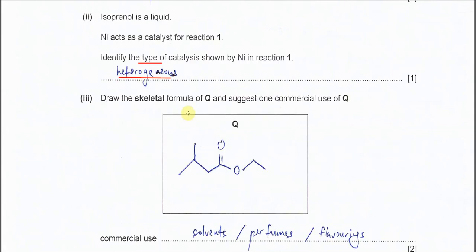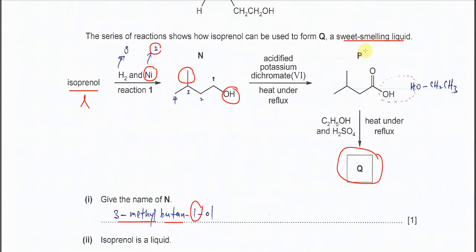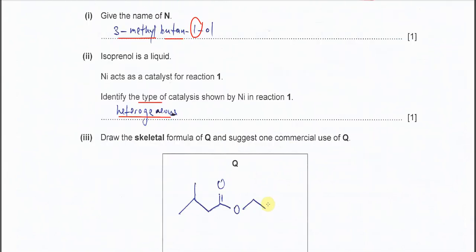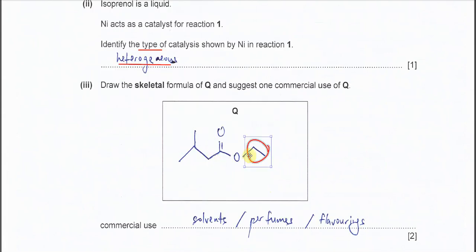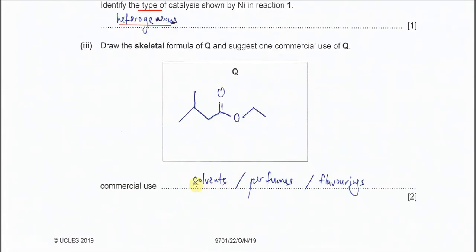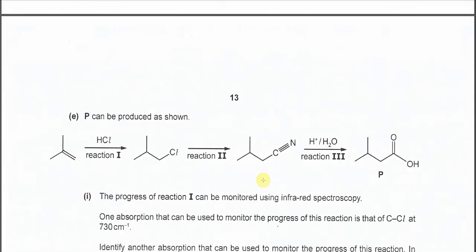Draw the skeleton formula of Q and suggest one commercial use of Q. Very easy. This is the P that form after oxidation, so it's a carboxylic acid. And this carboxylic acid will react with ethanol. So ethanol means this one will remove OH and ethanol will remove H. Then it will form a new bonding. So it will form ester bond and it will be ethyl group here. So that's why Q is look like this, ethyl group here with ester bond, and the same structure. So you get this skeleton formula for the Q. The commercial use is the solvent, is used as a solvent perfume or flavoring.